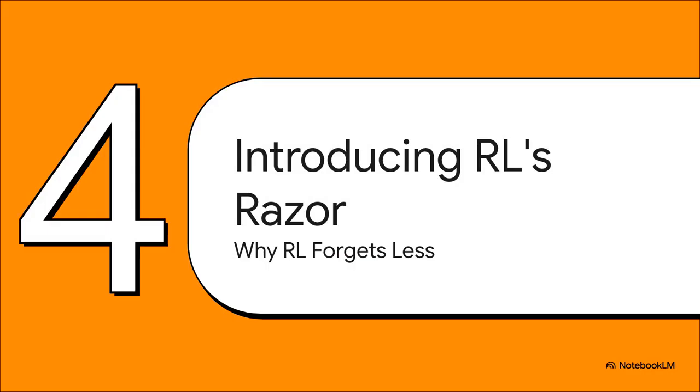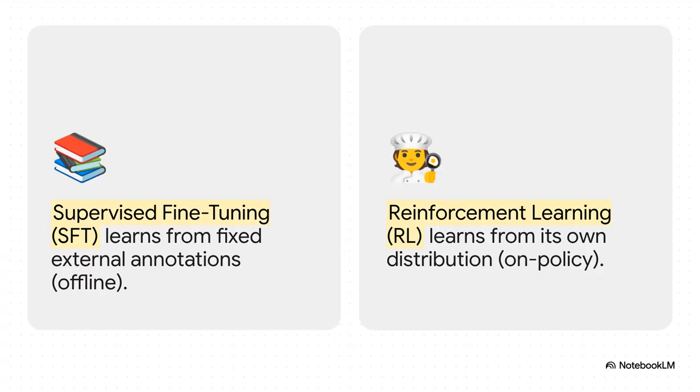Okay, so we know what predicts the forgetting. It's KL Divergence. But we still don't know why RL is so much better at keeping it low. And that brings us to the core concept of this whole paper. Introducing RL's Razor. To get this, you have to understand the fundamental difference in how they learn.